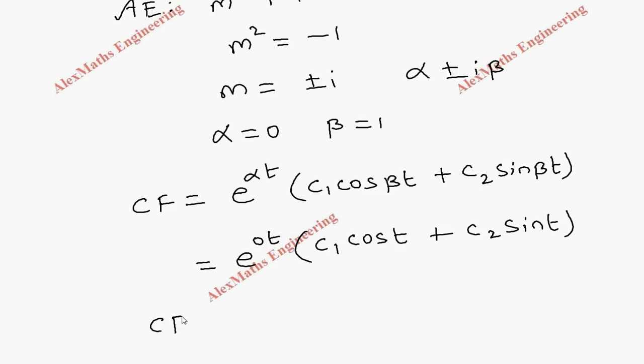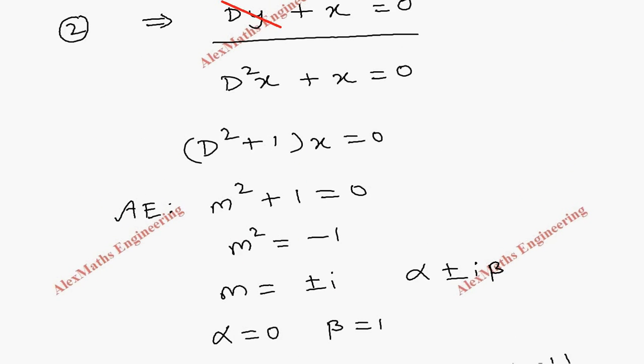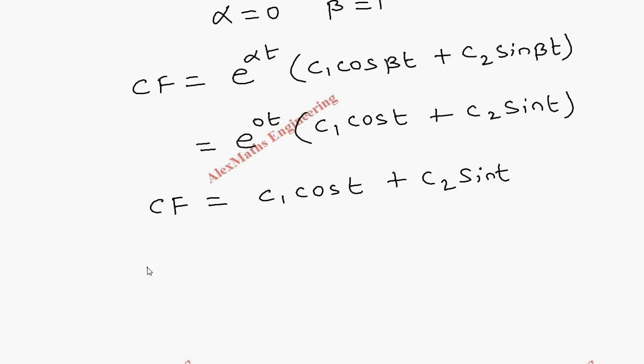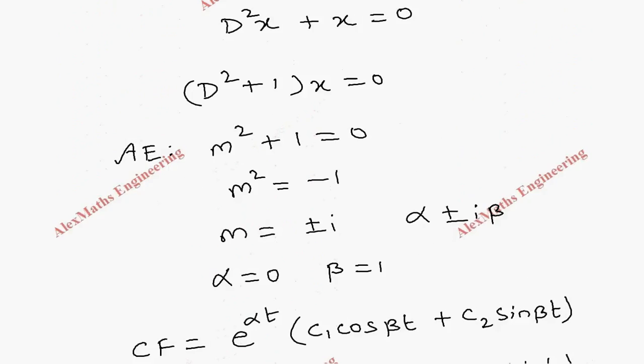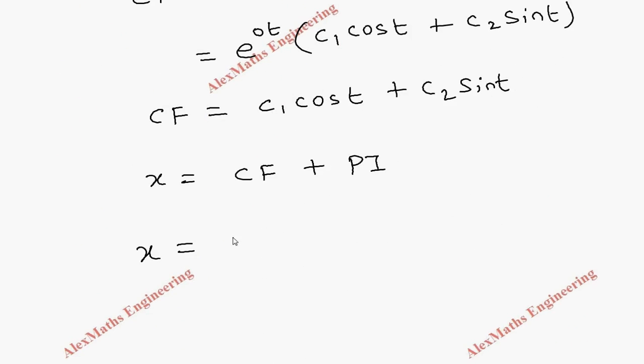So our complementary function is c₁cos(t) + c₂sin(t). Now, complete solution is usually y = CF + PI but here we are solving the equation in terms of x. So our complete solution x will be CF + PI and in the right hand side, we don't have any function. It is 0. So PI is 0. So our complete solution x is c₁cos(t) + c₂sin(t).